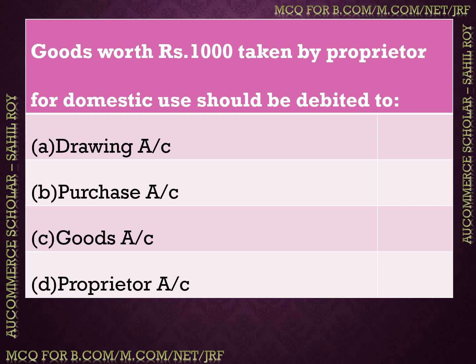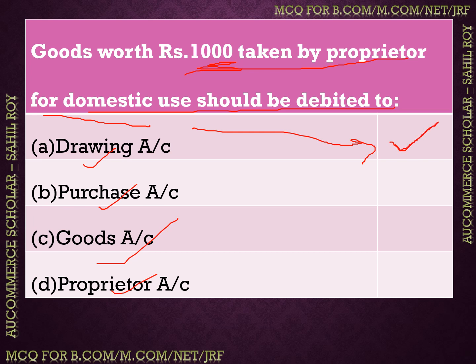Next question: goods worth rupees 1000 taken by the proprietor for domestic use. The proprietor had purchased goods for sale but took them for personal use. Where should this be debited — drawings account, purchase account, goods account, or proprietor account? The correct answer is: debit in drawings account. Any item taken by the proprietor for personal use — whether goods or cash — is considered drawings.